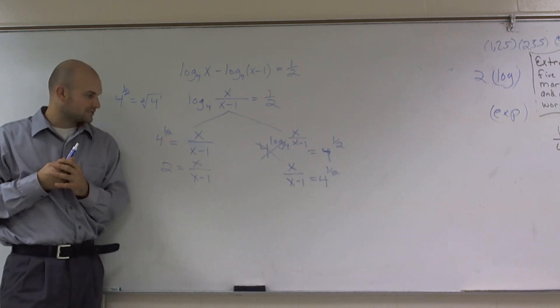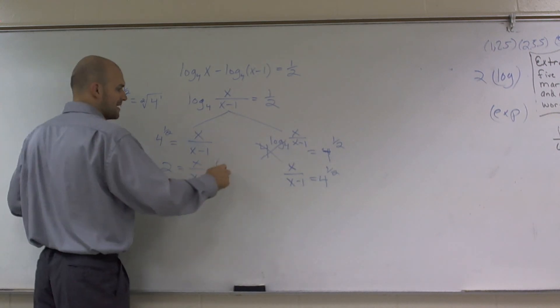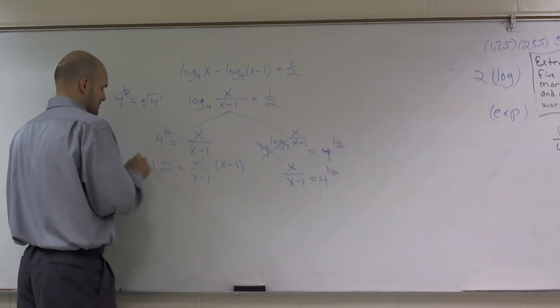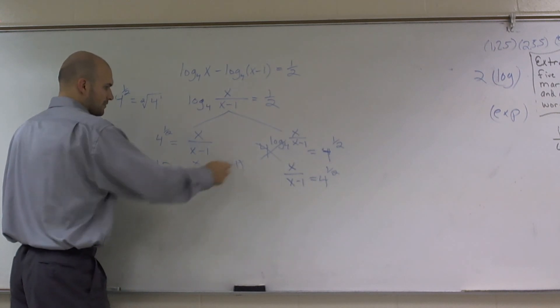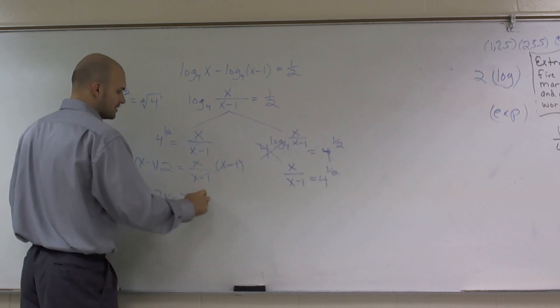So now we have a rational expression equals 2. I need to get this x off the bottom. So I'm going to divide by x minus 1 on both sides. Therefore, those will cancel out over here. And I'm left with 2x minus 2 equals x.